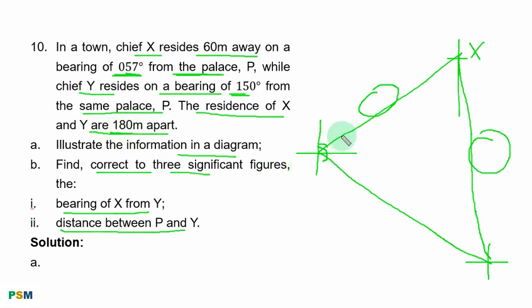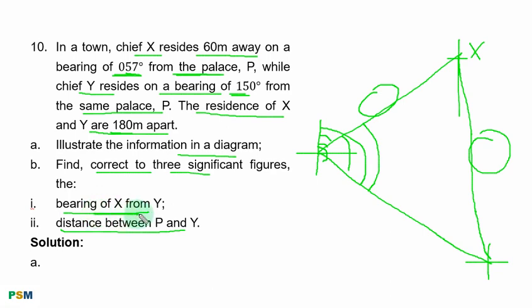From here we can get the angle at P. From the north to S is 57 degrees, and from the north to Y is 150 degrees. The angle SPY is therefore 150 degrees minus 57 degrees. We have this angle so that we can compute the distance between P and S. Before then, the bearing of S from Y is needed. From Y, you move from the north to the line that joins S and Y together — that must be 270 degrees plus this other angle.